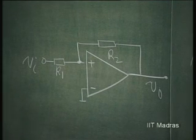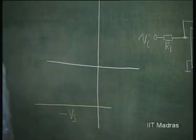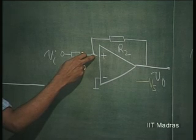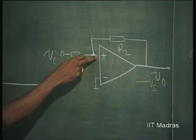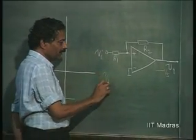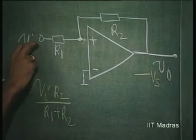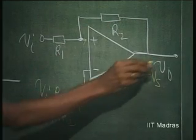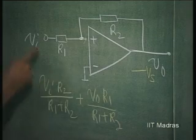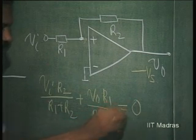What happens here is that V_naught for large negative voltage applied to the non-inverting input has to be negative, so it would start from minus Vs. The voltage at the non-inverting input is Vi·R2/(R1+R2) plus V_naught·R1/(R1+R2). When this becomes equal to zero, a change of state should occur. V_naught at present is minus Vs, so when Vi becomes equal to plus R1·Vs/R2, change of state will occur.